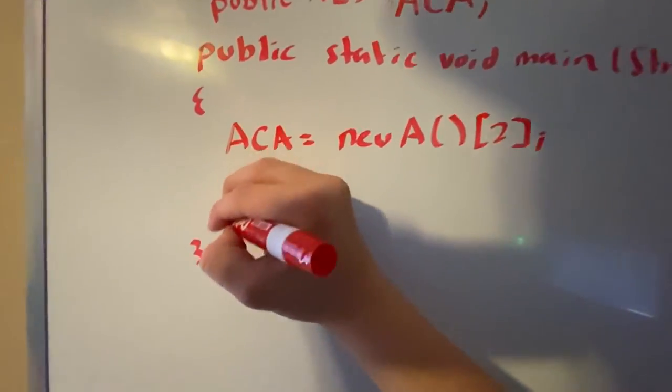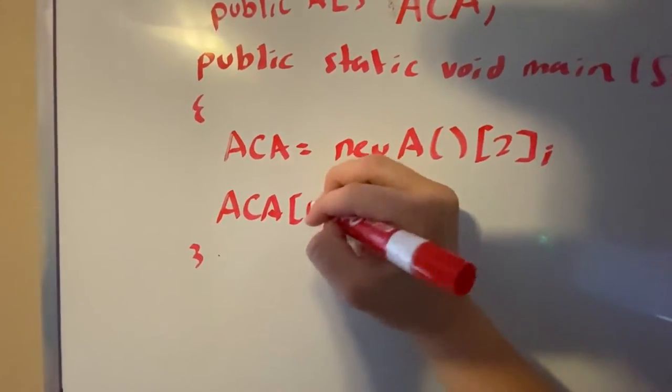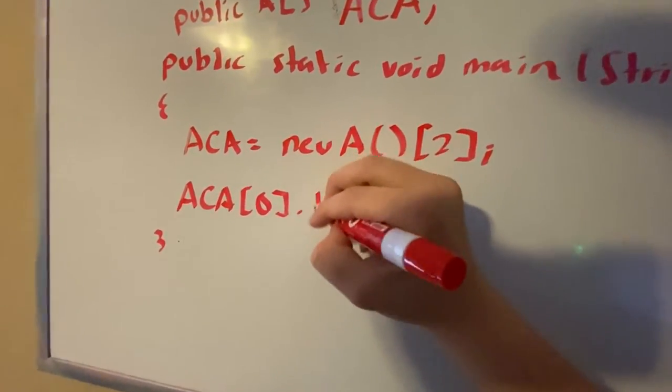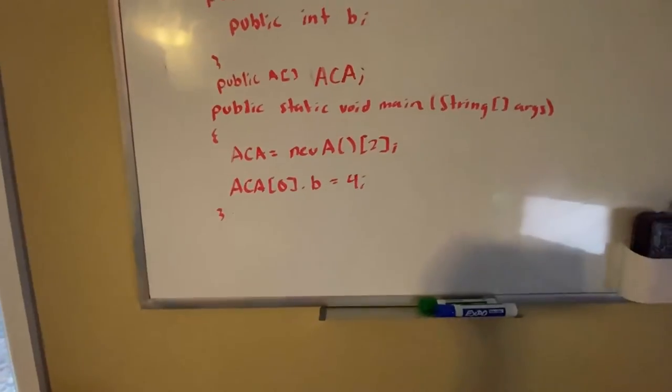So now in here, we can do a ca. Let's say we want to access b. What we do is we put the index we want to access, and then we do dot b, and we can set it equal to or, for example, just like that. Okay.